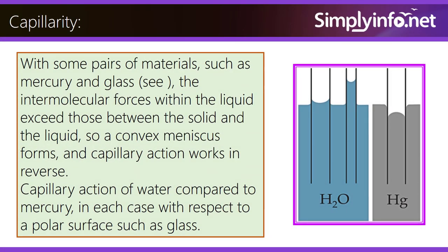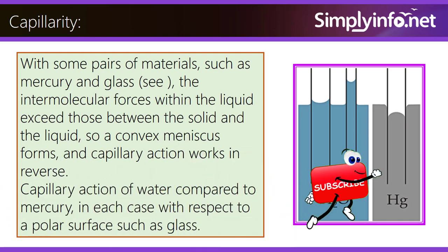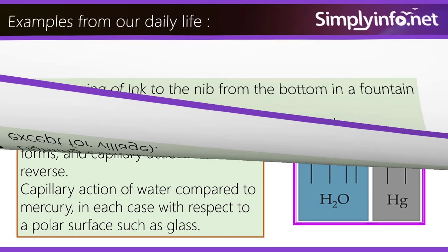With some pairs of materials such as mercury and glass — see the image — the intermolecular forces within the liquid exceed those between the solid and the liquid. So a convex meniscus forms and capillary action works in reverse. This shows capillary action of water compared to mercury, in each case with respect to a polar surface such as glass.